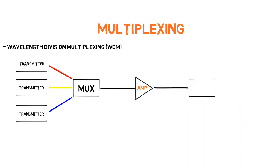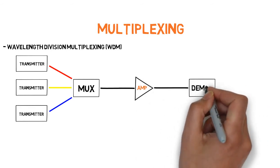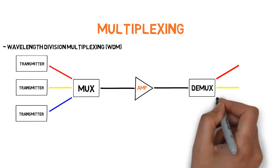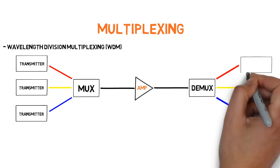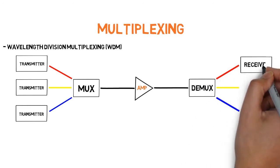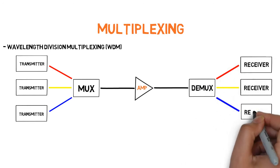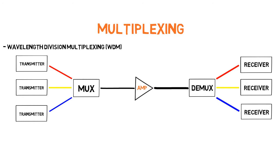At the receiving end of the optical system, a demultiplexer, or DEMUX, takes the signal and splits it back into its original components. Multiplexers are extremely handy because they expand the network capacity without adding any more fiber to the mix.